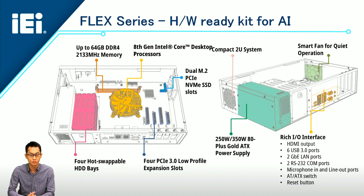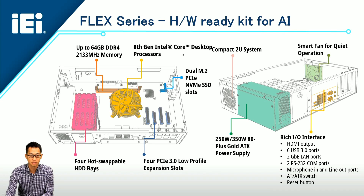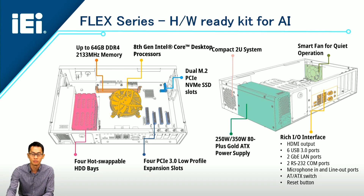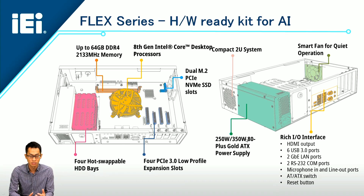With Flex series and the various add-on cards, along with OpenVINO and QNAP DL platforms, we provide an AI-ready turnkey solution. Taking a closer look: it is a 2U compact system powered by Intel 7th/8th-gen Core desktop processors, supporting up to 64GB DDR4 memory. It also supports 4 PCIe Gen3 expansion slots for easy system scaling, with a 4 hot-swappable drive bay, and supports a 250W or 350W gold-certified ATX power supply.